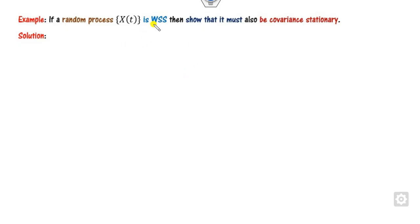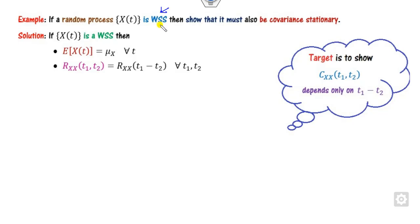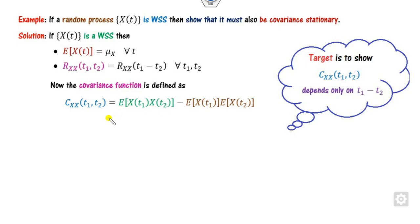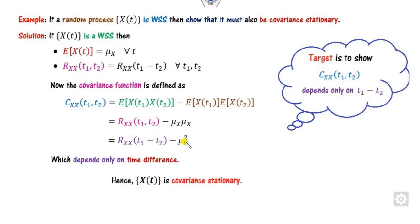The first result is: whenever a random process is weak sense stationary, the covariance is also stationary. The target is to prove the covariance depends only on the time difference. Given that it is weak sense stationary, the mean is constant. Starting from the definition of covariance — C(t1, t2) = R_xx(t1, t2) minus mu_x squared — since the autocorrelation depends only on the time difference and mu_x is constant, the covariance is also a stationary process.